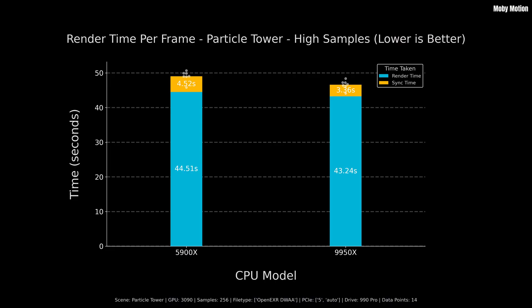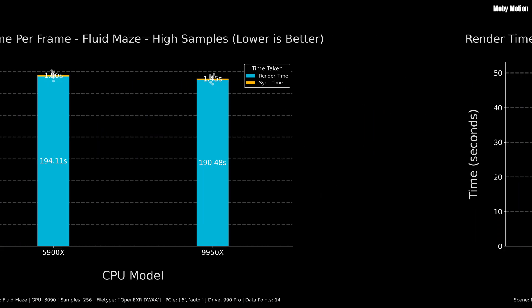Rendering with a low sample count is how I render most of my projects, especially if they're tens of thousands of frames. But let's run those same experiments with a higher sample count — all high-sample experiments used OpenEXR DWAA only. For the particle tower with 256 samples, overall it was 5.2% faster on the 9950X. Render time was 2.9% faster, and sync time was 34.8% faster. For the fluid maze, total time was 2.1% faster, cycles render time was 1.9% faster, and sync time was 31.0% faster.